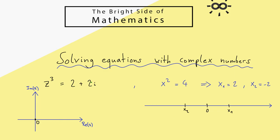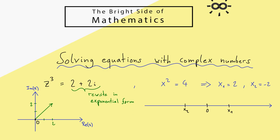We need another picture in the complex plane, but first I want some visualization for the complex number 2 plus 2i. Putting it in the complex plane: 2 on the real axis and 2 on the imaginary axis gives a point we can visualize with an arrow. One important thing: when you have a power of z in an equation, it is always helpful to rewrite the number on the right hand side in polar form, or better in exponential form. This is indeed very helpful, as you will see soon.